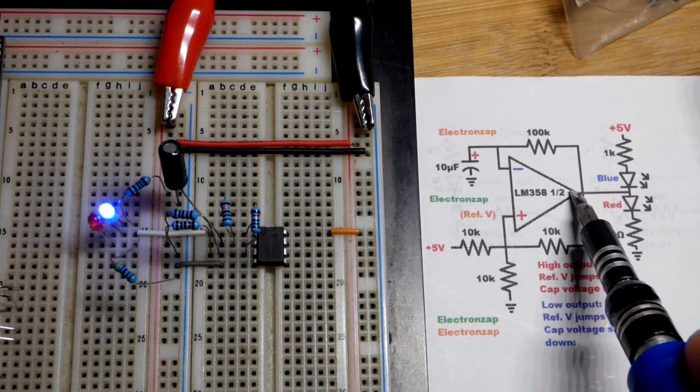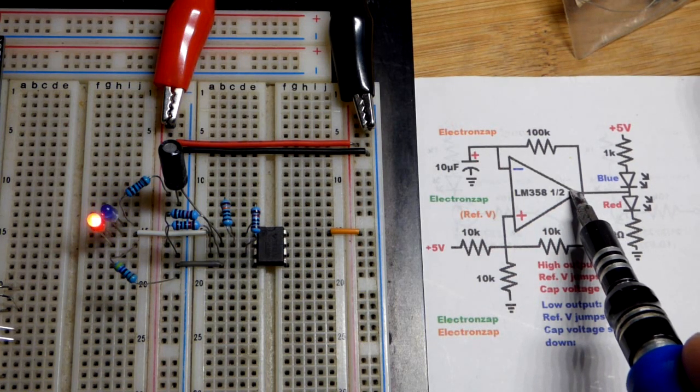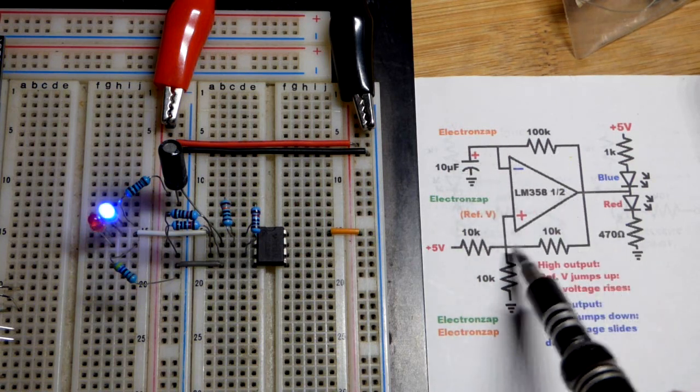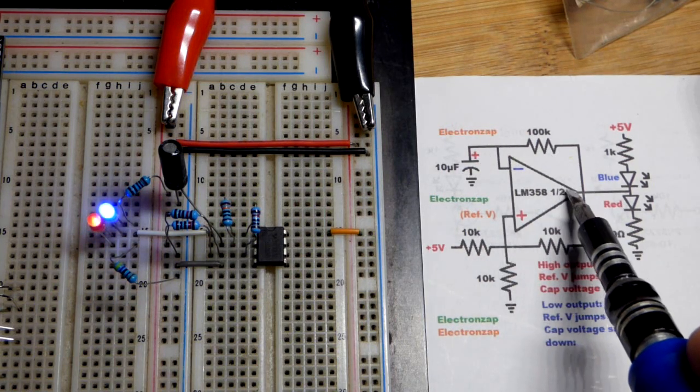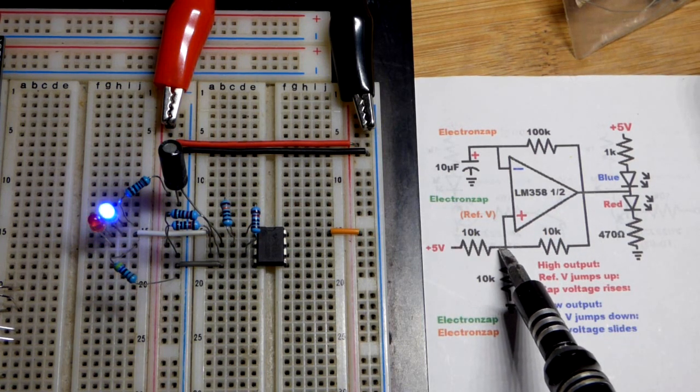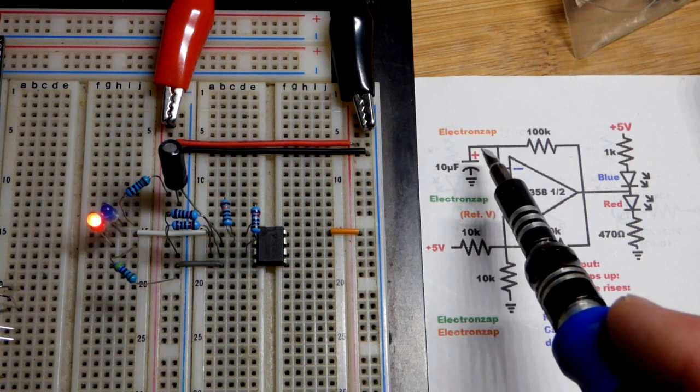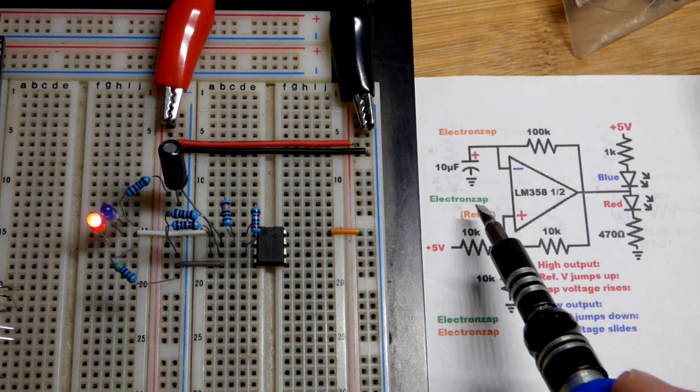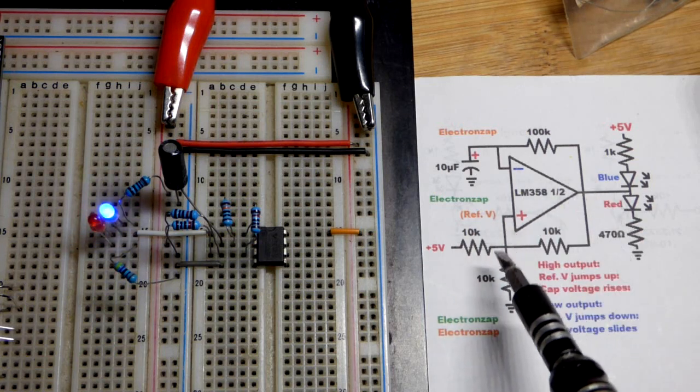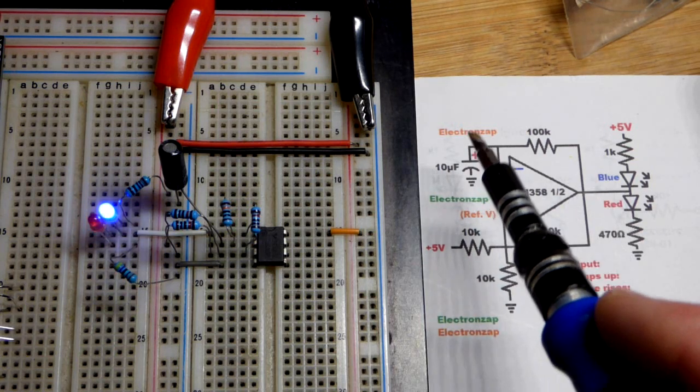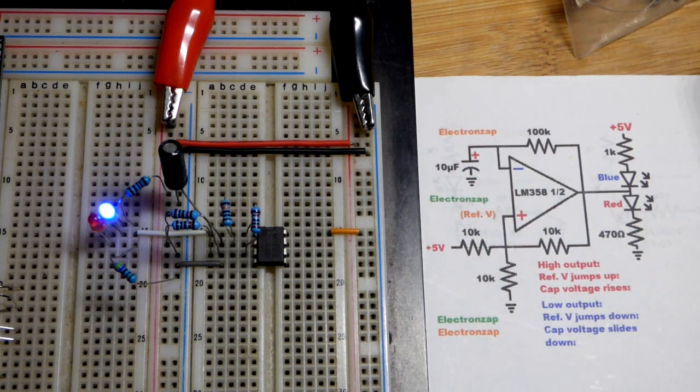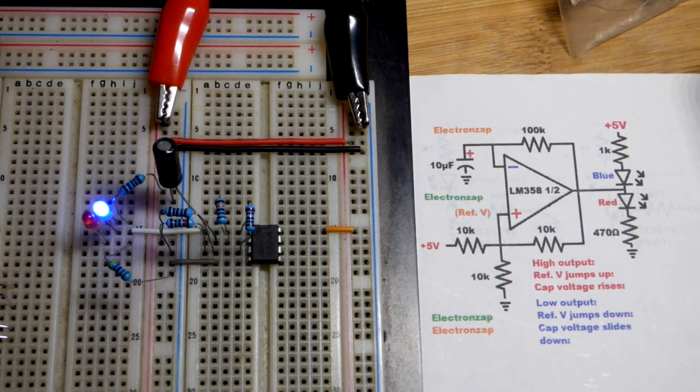It basically connects to ground as good as it can. So that starts discharging the capacitor. But our reference voltage here, it connects to the negative supply. It pulls it down. So now we have a lower voltage that the capacitor has to discharge to until it gets below that point. Output goes high, raises the reference voltage, and the capacitor charges again towards a higher voltage. So it keeps bouncing back and forth.